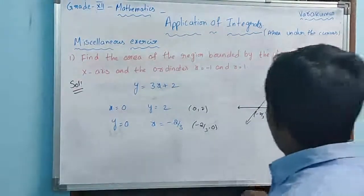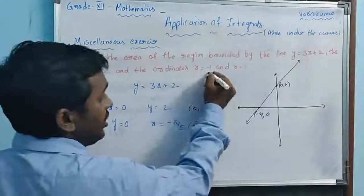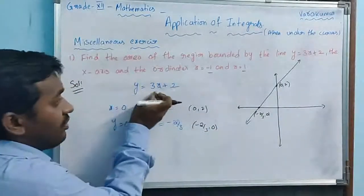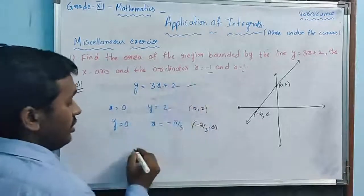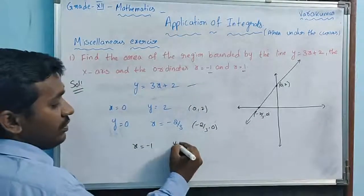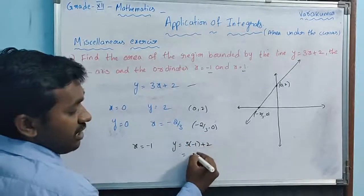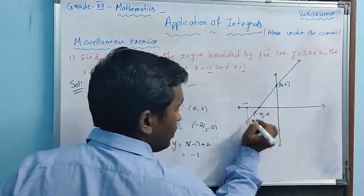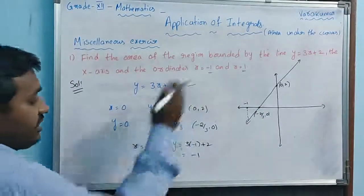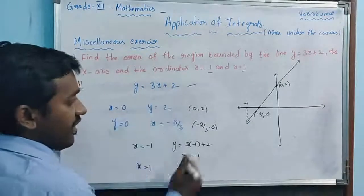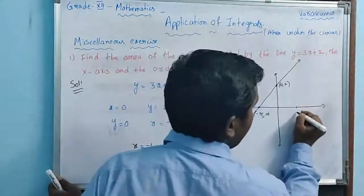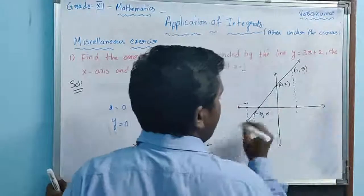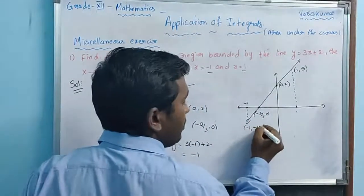We need to find the area between the ordinates x = -1 and x = 1. At x = -1: y = 3(-1) + 2 = -3 + 2 = -1, so the point is (-1, -1). Similarly, at x = 1: y = 5, so the point is (1, 5).